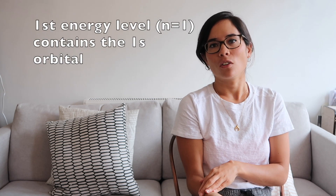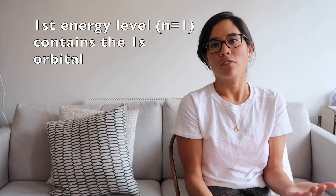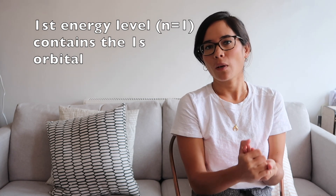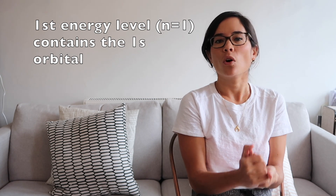Let's take a step back and look at N equals 1 again, the first energy level. Based on 2N², it can hold a maximum of two electrons. An S orbital can also hold a maximum of two electrons, which is why the first energy level only has the S sub-level. That's why when you start filling it up, you write 1s²: the 1 because it's the first energy level, S because it contains an S sub-level, and 2 because it contains two electrons.